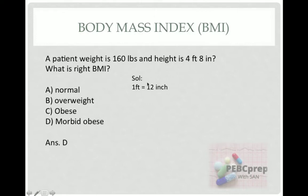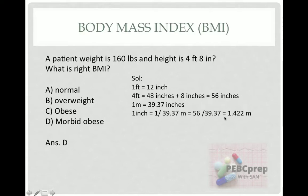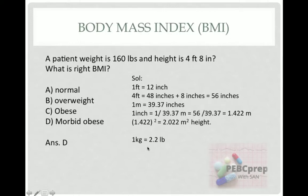One foot equals 12 inches, and the patient is 4 feet, so 4 feet equals 48 inches, plus 8 inches equals 56 inches total. We already learned that one meter equals 39.37 inches, so one inch equals 1/39.37 meters. Therefore 56 inches divided by 39.37 gives us 1.422 meters. When you square this value you get 2.022 meters squared, because the height in BMI is in meters squared.